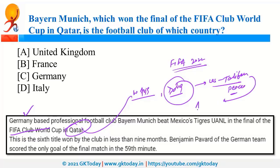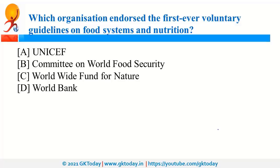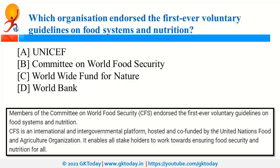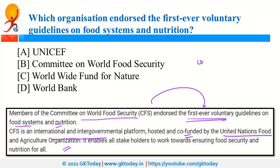The Committee on World Food Security (CFS) endorsed the first-ever voluntary guidelines on food systems and nutrition. CFS is an international intergovernmental platform co-funded by the United Nations Food and Agriculture Organisation (FAO). The headquarters of FAO is in Rome, Italy.